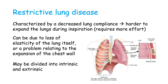Individuals with restrictive lung diseases usually have dyspnea or difficulty breathing, an increased respiratory rate, and a decreased tidal volume. Tidal volume is the amount of air that moves in or out of the lungs with each respiratory cycle. If you have a decreased tidal volume, you will likely compensate by increasing your respiratory rate. Restrictive lung diseases may be divided into intrinsic and extrinsic types.